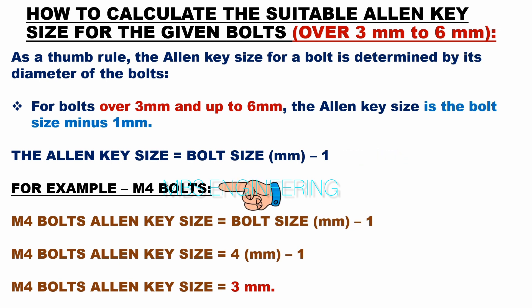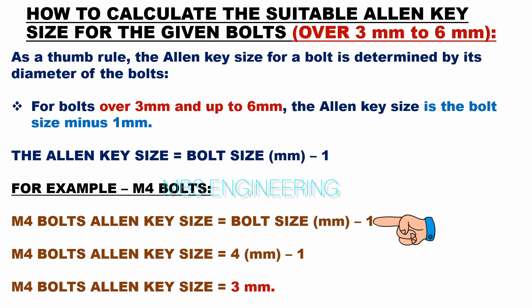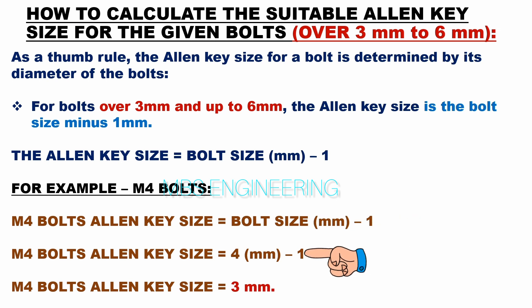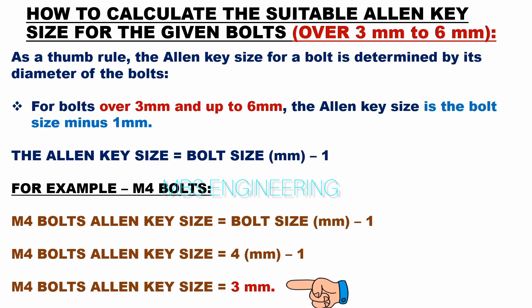Sample calculation for M4 bolts: allen key size = bolt size (mm) − 1 mm = 4 mm − 1 mm = 3 mm. Therefore, M4 bolts require a 3 mm allen key.